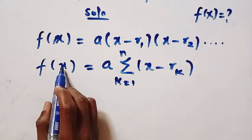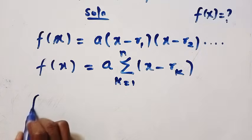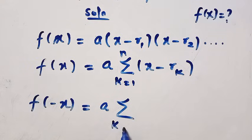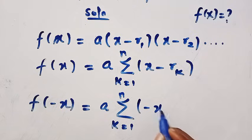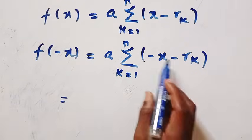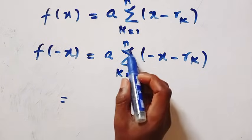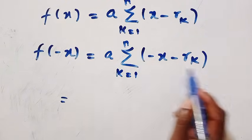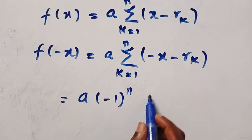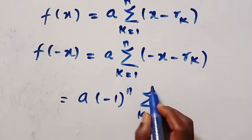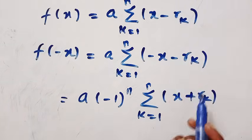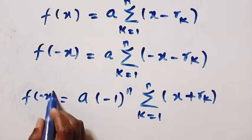To get f(-x), we replace every x with -x. So f(-x) equals a times the product from k = 1 to n of (-x - rₖ). Factoring out the negative, we get a times (-1)ⁿ times the product from k = 1 to n of (x + rₖ). Taking out the negative makes all terms positive.